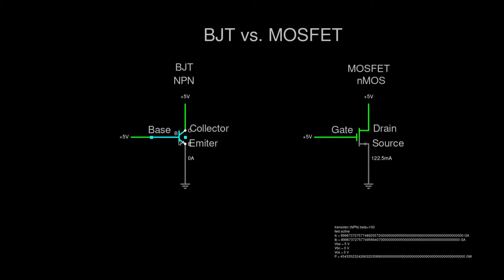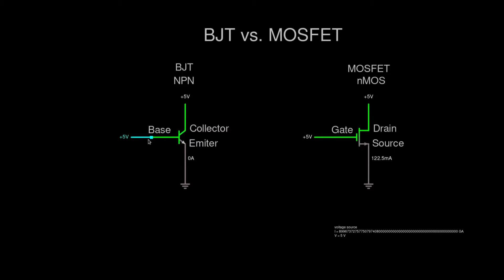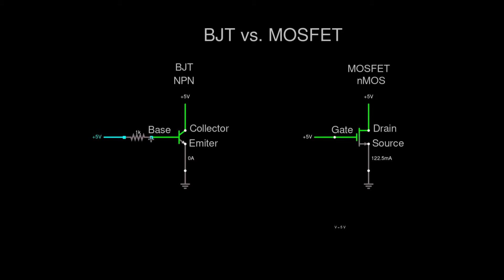That is basically short-circuiting, so we need to fix that. Let's use a resistor for that. After resetting the simulation, we can see that the amps are a bit higher than on the MOSFET side.